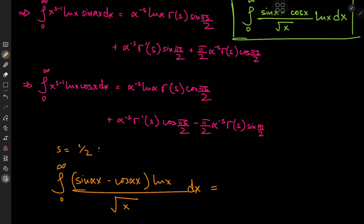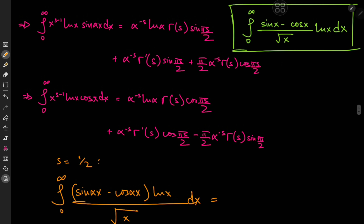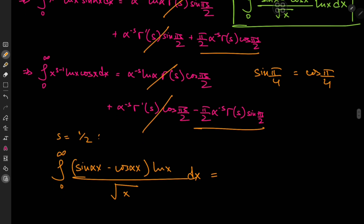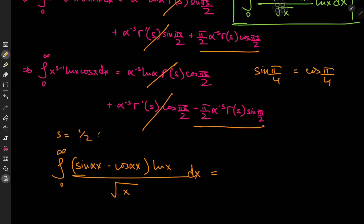Notice first that because sine(pi/4) equals cosine(pi/4), when we subtract one integral from the other, quite a few terms cancel out — including the log(alpha) terms and the gamma prime terms, so the digamma function doesn't appear this time. We're left with the remaining terms: two negatives cancel, we can factor out pi/2, giving alpha to the negative 1/2 times gamma(1/2), and then cosine(pi/4) plus sine(pi/4), which equals root 2.